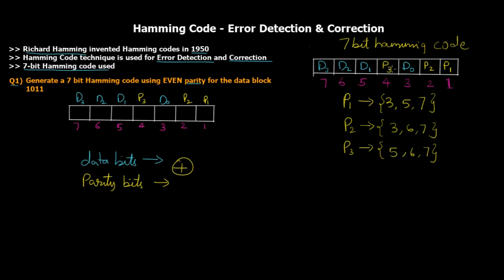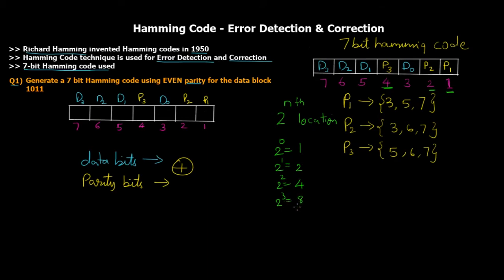Locations one, two, and four are the parity bits. The formula is that every 2^n location is a parity bit position. Starting from 2^0 = 1, 2^1 = 2, 2^2 = 4 — those are parity bit positions. For 2^3 = 8, that would be beyond our seven positions, so we don't need P4. Three parity bits are enough to perform error detection and correction on a four-bit data code.